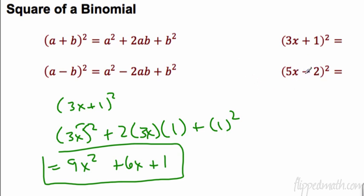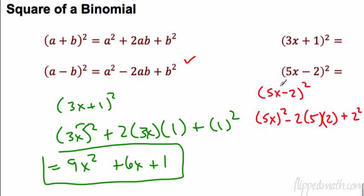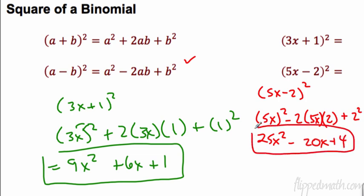Why don't you try doing this one by yourself using the second rule? Pause the video. We have 5x minus 2 squared. We have a squared minus 2ab plus b squared. So: 25x squared minus — 2 times 5 is 10 — so minus 20x plus 4. Well, that's easy enough. So if we know these rules, we can do our work more quickly.